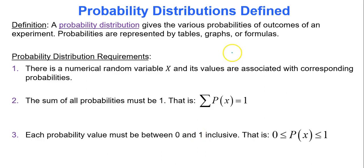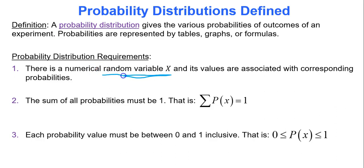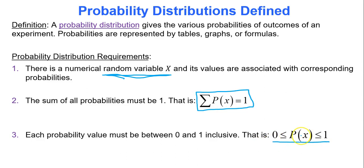A probability distribution gives the various probabilities of outcomes of an experiment — like flipping a coin 5 times and listing probabilities from 0 to 5 heads. The requirements are: there is a random variable x, the sum of all probabilities must equal 1, and each individual probability must be between 0 and 1. Requirements 2 and 3 are the most important to check.